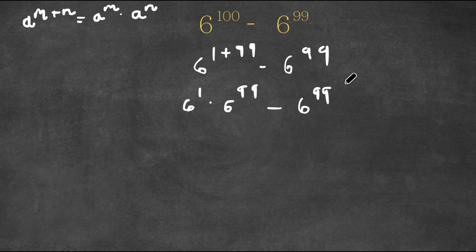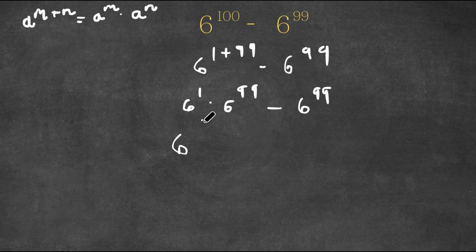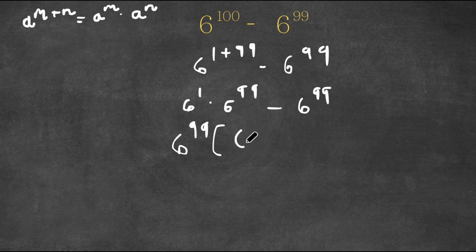Now, because both terms here — 6 to the power of 1 times 6 to the power of 99, as well as negative 6 to the power of 99 — both of these terms have 6 to the power of 99 in them, I'm going to factor out 6 to the power of 99. So now I have 6 to the power of 99 times the quantity: 6 to the power of 1 minus 1, since 6 to the power of 99 divided by 6 to the power of 99 is 1.